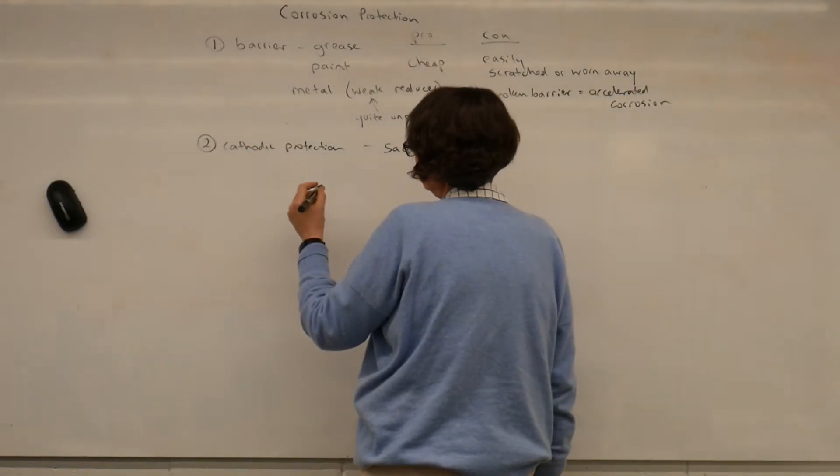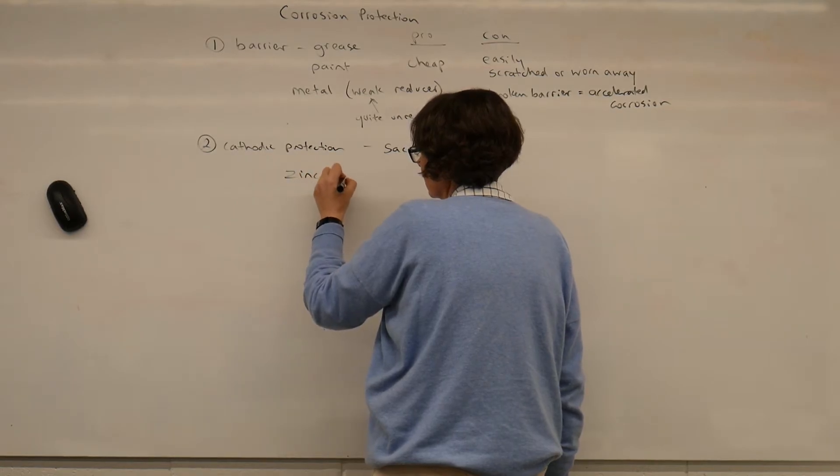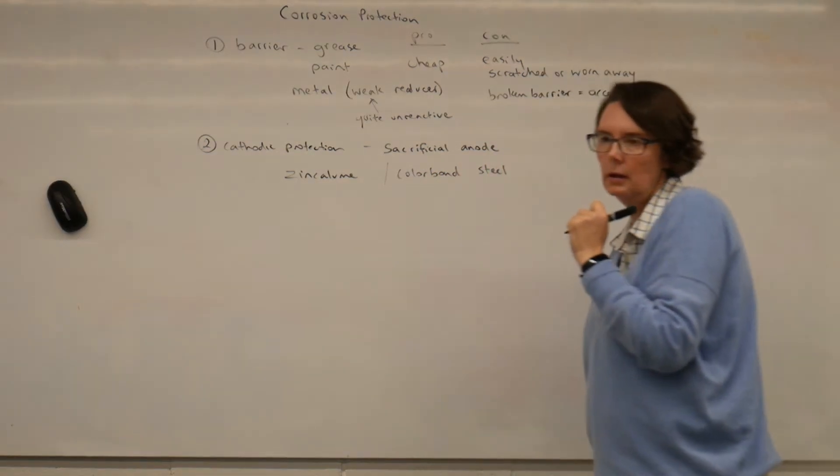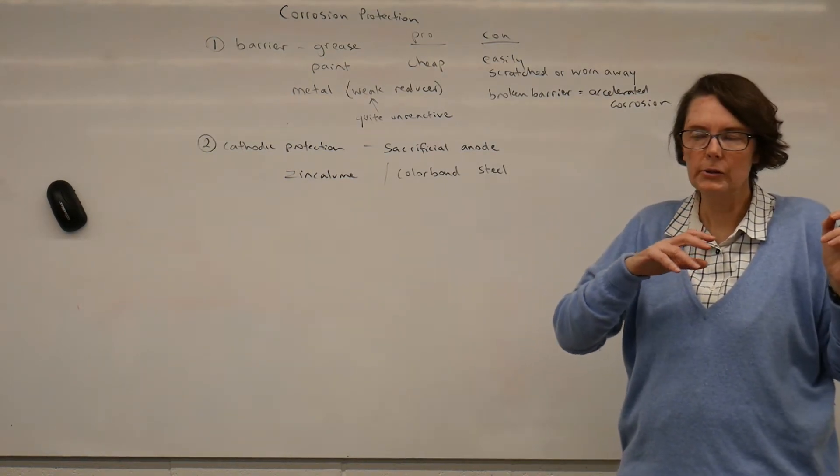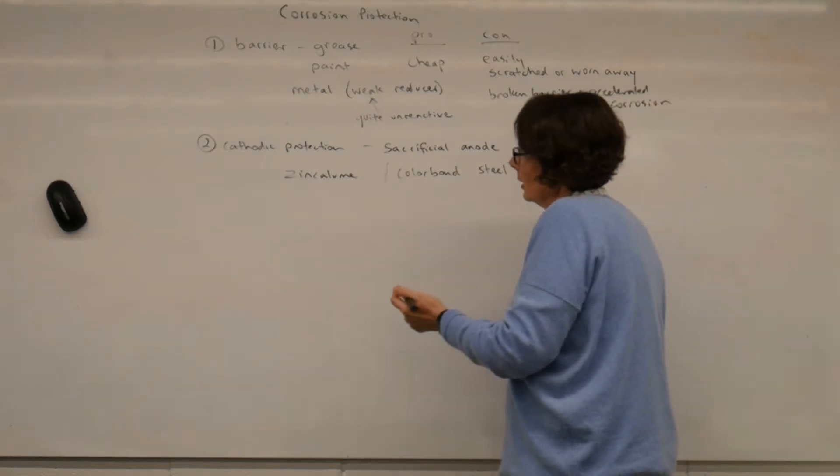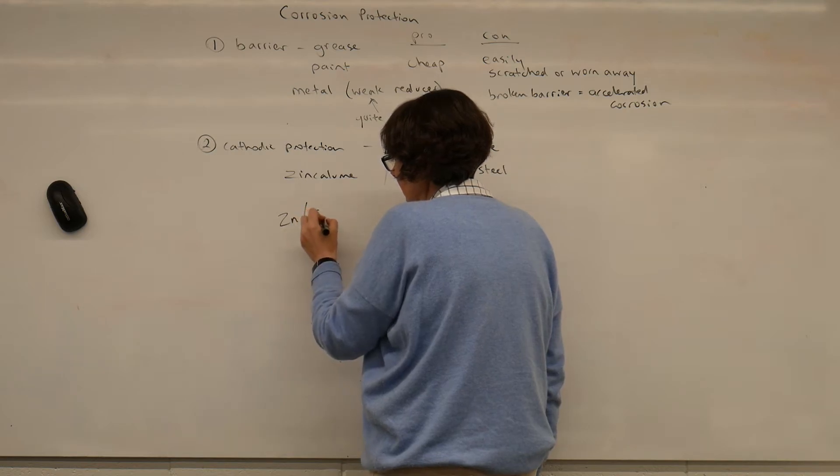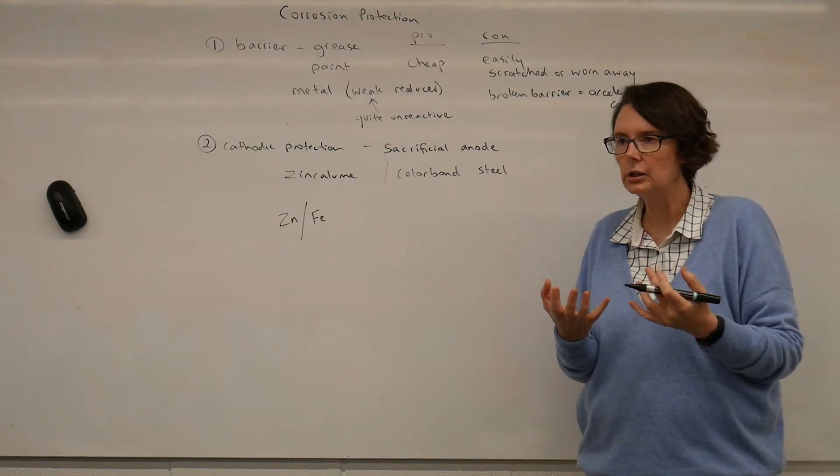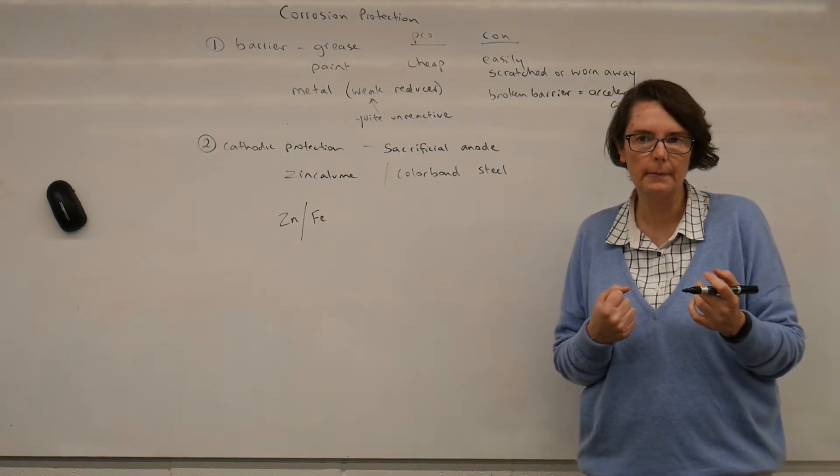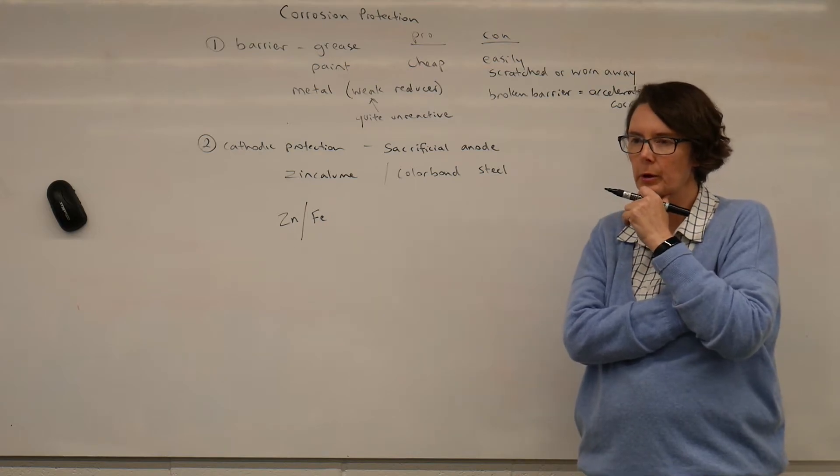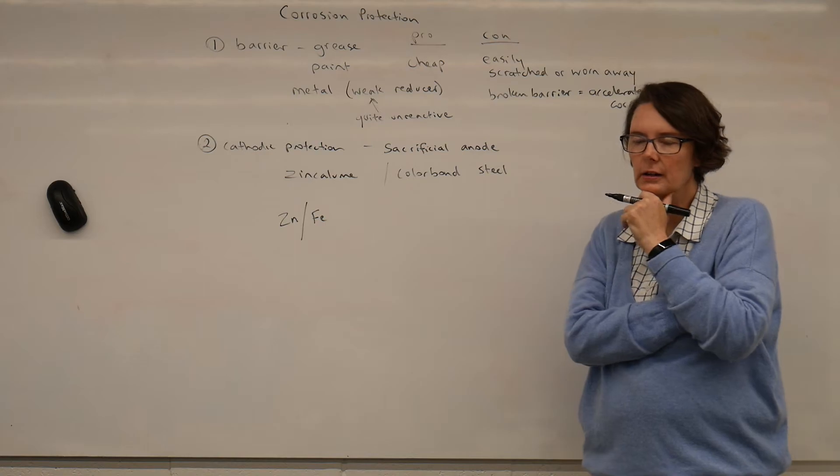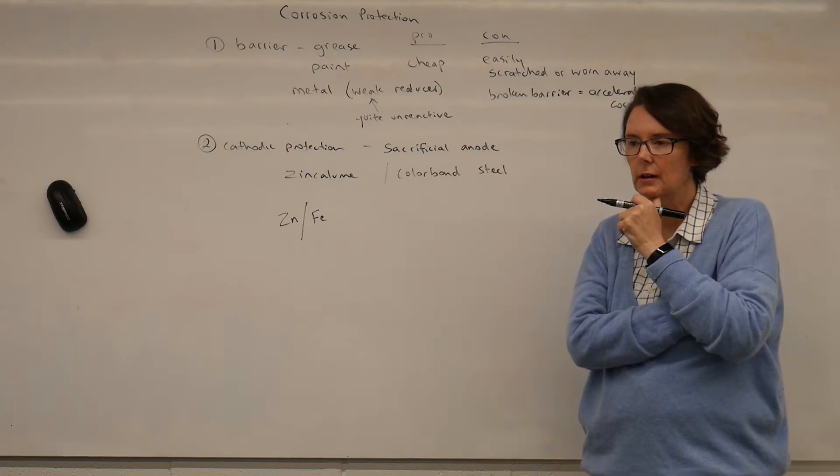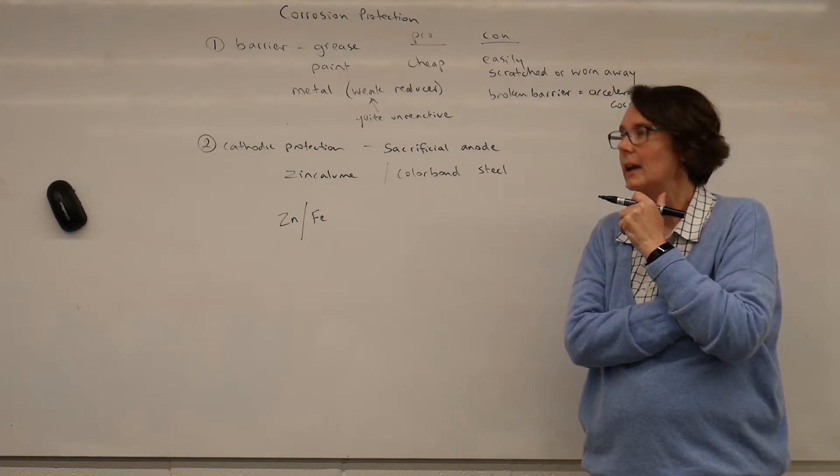If you've bought zinc-alume or color-bond steel, you know, so corrugated roofing materials and house cladding. This is actually zinc and iron in contact. So, we have our two metals in contact. But what can you tell me about the oxidation that's going to occur if we have zinc and iron in contact? Emily, you're on fire at the moment. We've got zinc and iron in contact. Which one will oxidise? Have a look at your electrochemical series. Zinc will oxidise. So, zinc will oxidise.